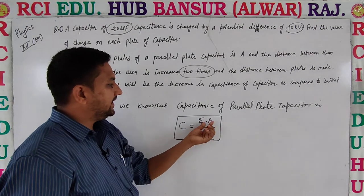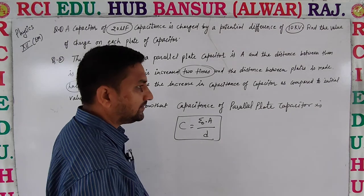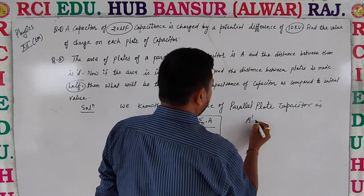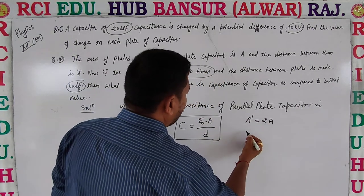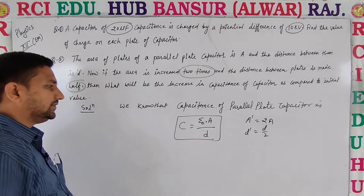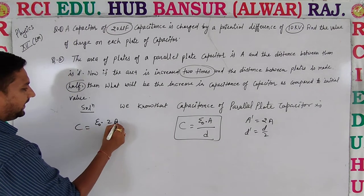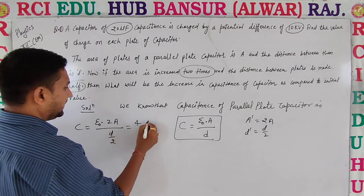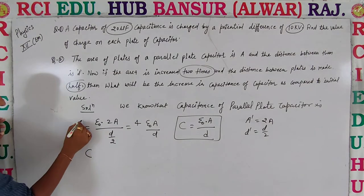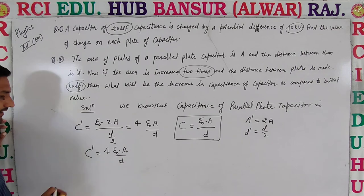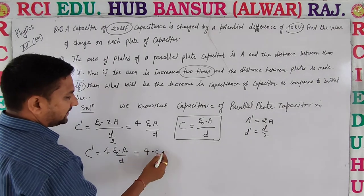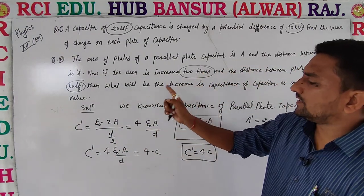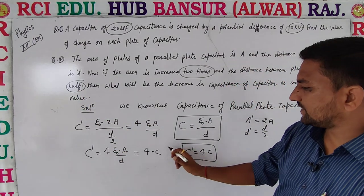So the initial value: area is increased two times and distance is made half. Let us consider area A dash equal to 2A and distance d/2. So C dash is equal to 4 epsilon-zero A upon D, which we can call 4 times C. So if area is doubled and distance between plates is halved, we get a 4 times increase in capacitance.